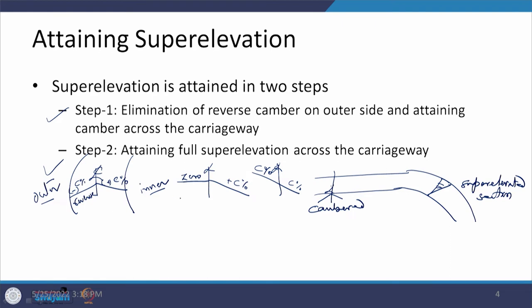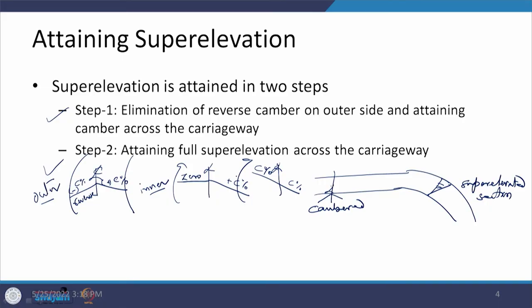There is a continuous change in the profile of the outer side and we are trying to bring it to a situation where the whole value is C percent. Once C percent has been attained, the next thing — step 2 — is attaining the superelevation E percent across the carriageway, where E is greater than C percent, and that is the way the total profile changes. We are going to talk about these things one by one.